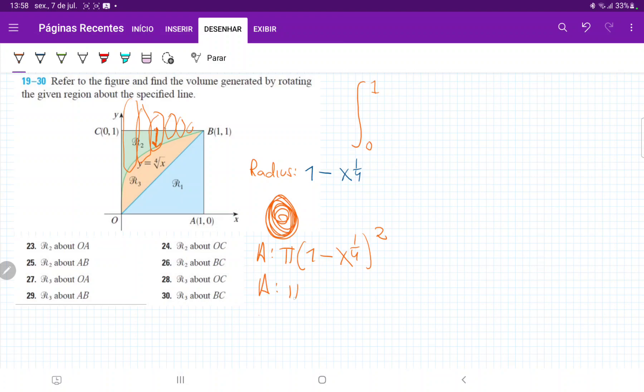Therefore, the area is pi times, let's see, that is x to the one-half, minus 2x to the one-quarter, plus 1. So that's our area.